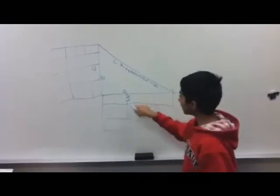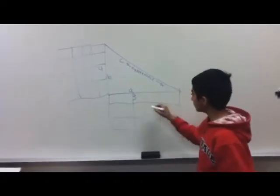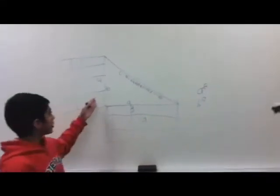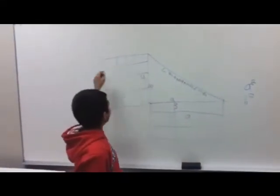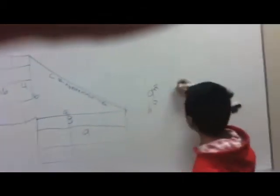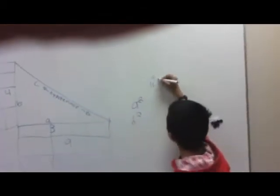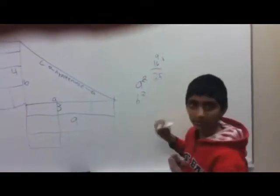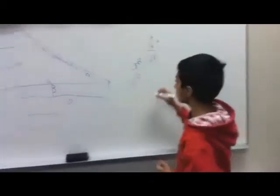A squared - you square A. A is three, so make a square out of it, which is nine. B squared - you have B. B is four. Square it. Four by four, you get sixteen squares. So now you've got a squared and b squared, which is nine and sixteen. Add them together, then twenty-five. So that's c squared.